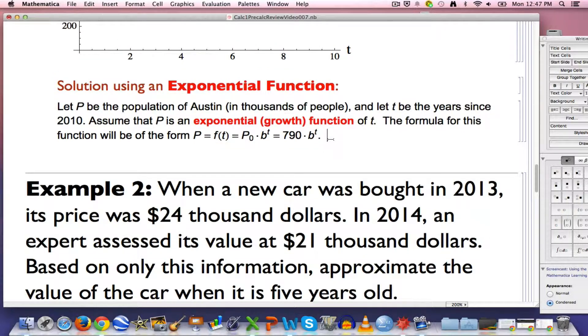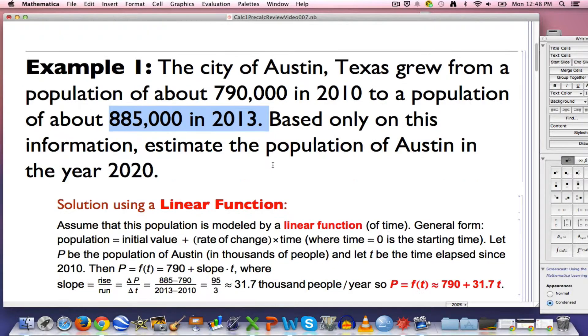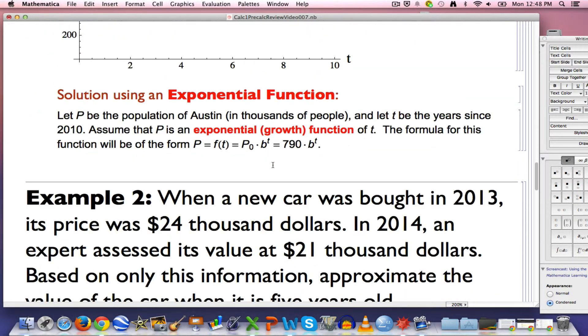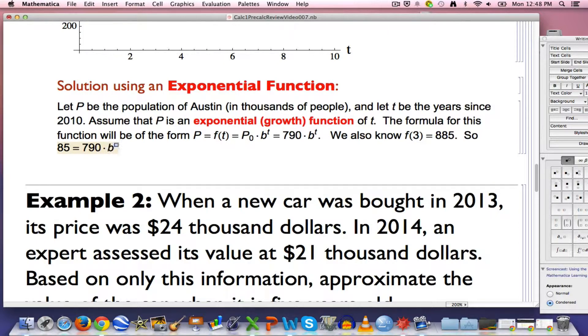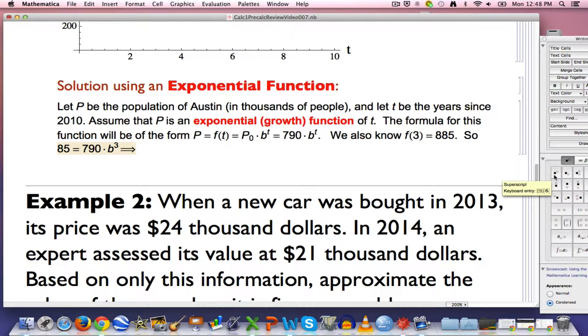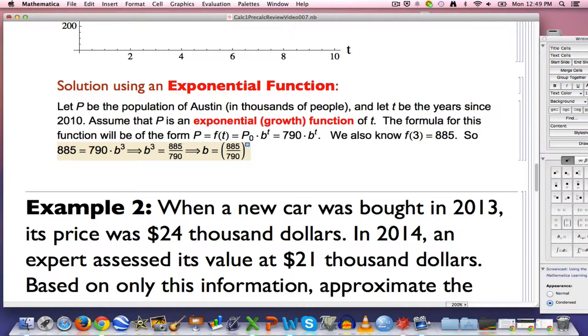But what will it be? This one's a little trickier because we're not looking one year into the future, we're looking three years into the future. F of 3 is going to be 885,000. We also know F of 3 is 885. We can still solve for b based on this fact. That's going to imply 885 equals 790 times b to the third. Divide both sides by 790. b to the third will be 885 divided by 790. So b itself is going to be the cube root of 885 divided by 790, that fraction to the 1 third power.